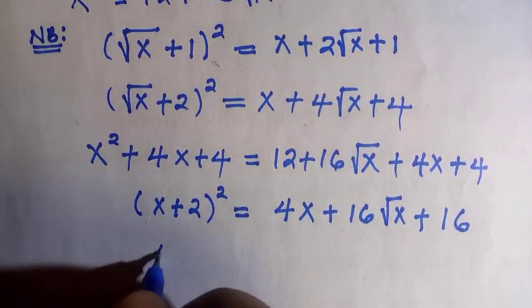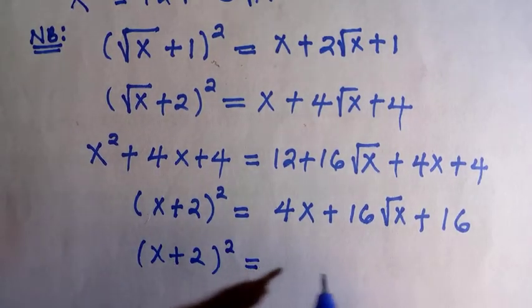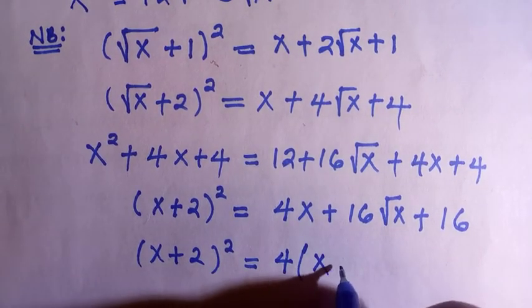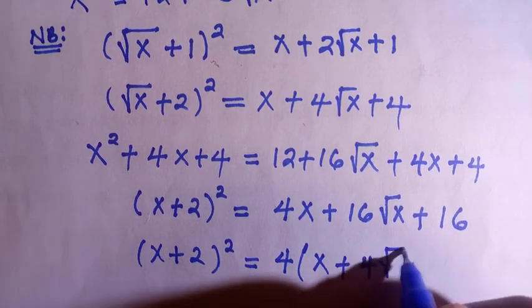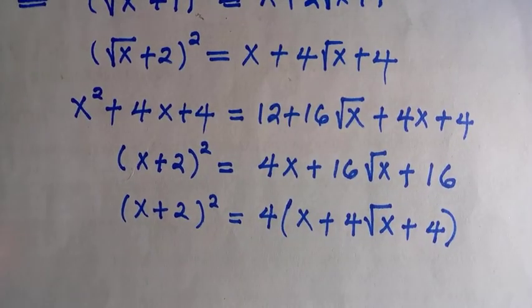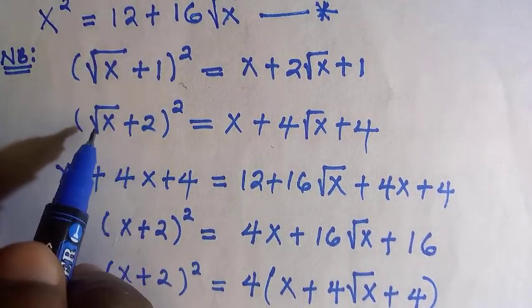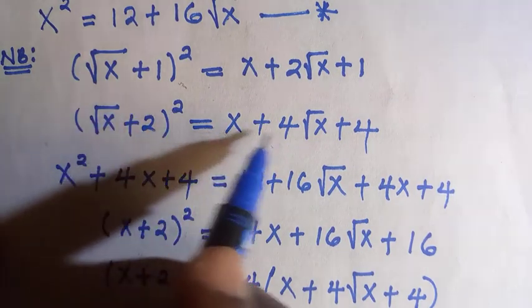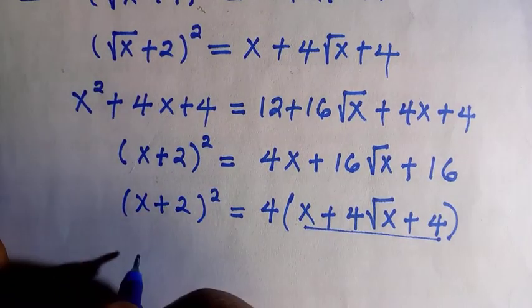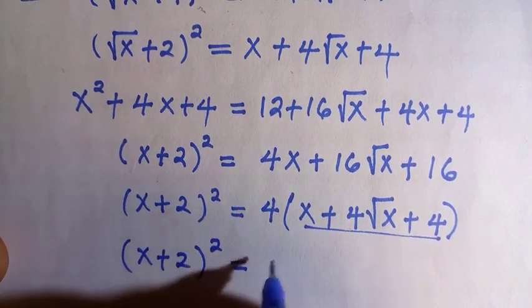Then something is common here, or let's say something is factorizable, which is the 4. By taking out 4, we have 4(x + 4√x + 4). Fortunately again, x + 4√x + 4 is equivalent to (√x + 2)². Instead of writing x + 4√x + 4, we replace it with (√x + 2)².